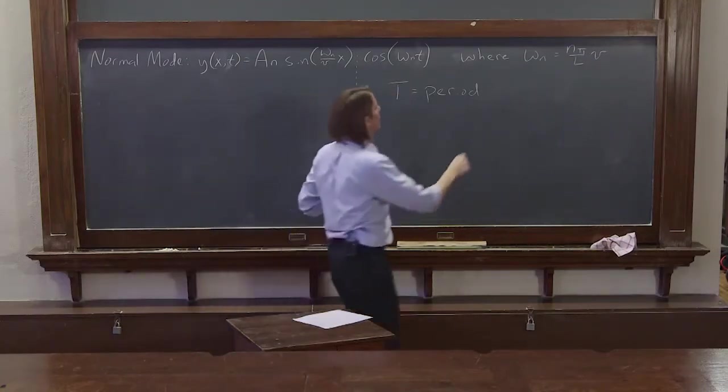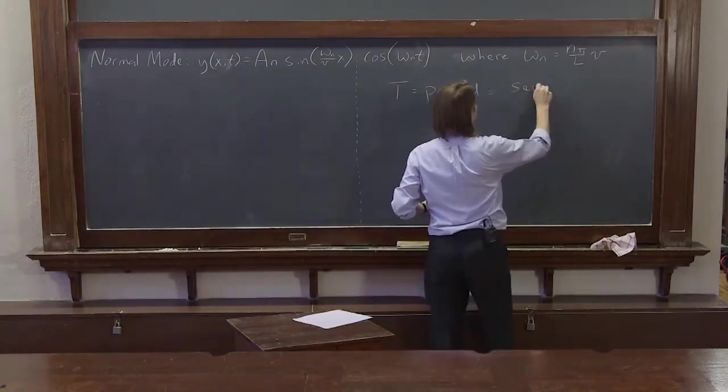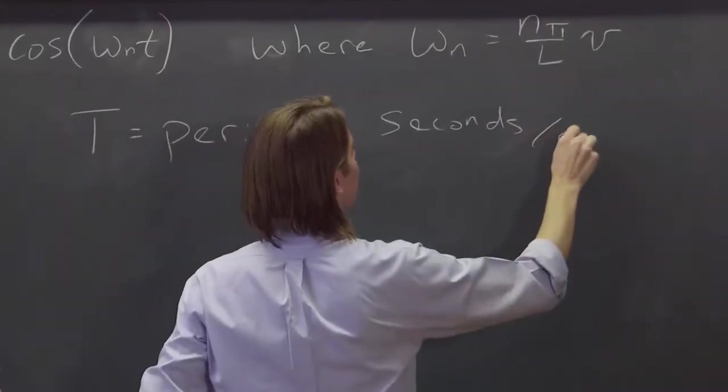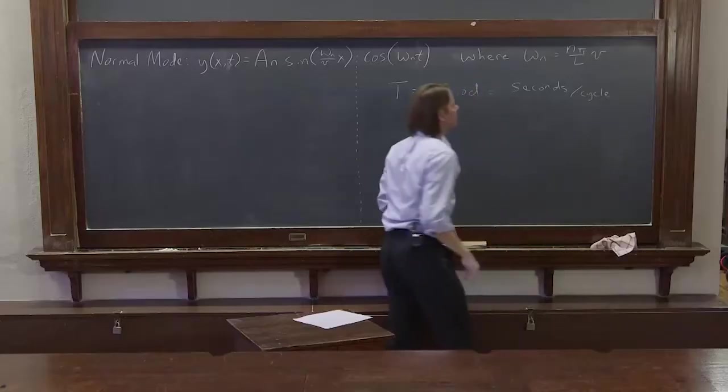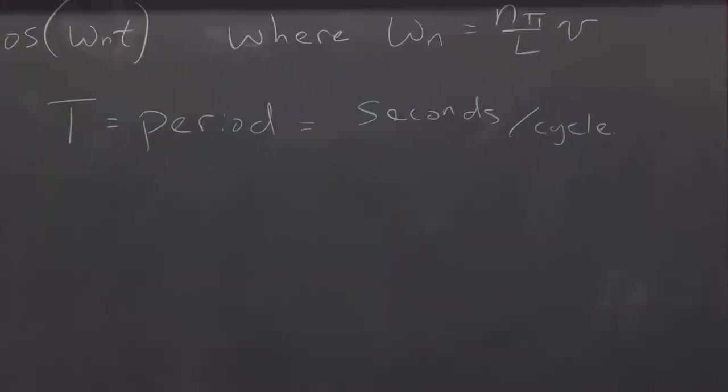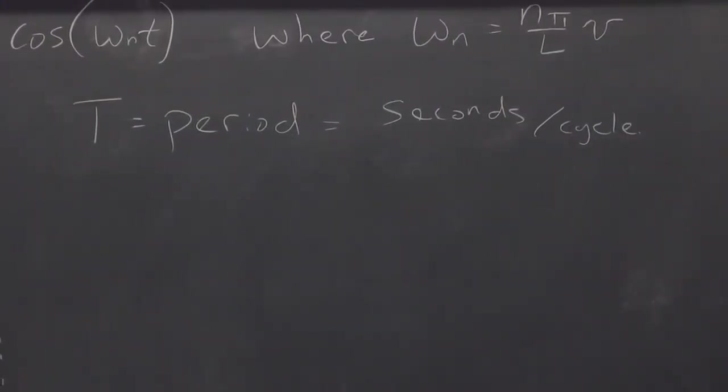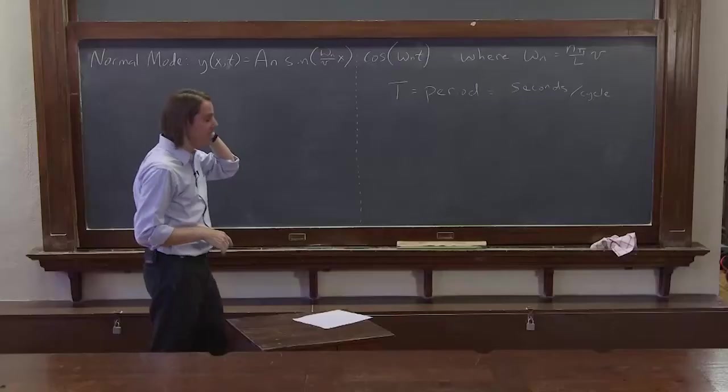What the period really is is the seconds per cycle. You don't usually think about the per cycle part, but technically that's what it is. What is the time it takes to go through an entire cycle is T.